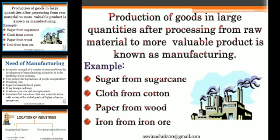For example, consider a sugar plant. Sugar cane goes directly into the sugar plant. Then, through a process of processing, it comes out as a finished good in the market. That very finished good is sugar.